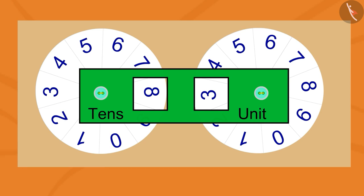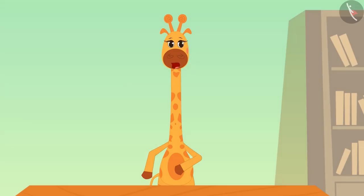By rotating these two circles, the number which will be seen in the square shape has to be read as it is here. Mom, here 8 is written in tens and 3 in units. That is 83. Well done, Gaffee.